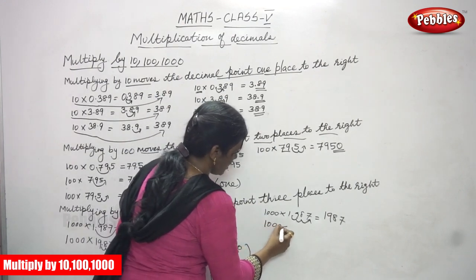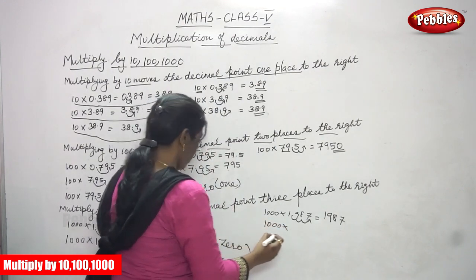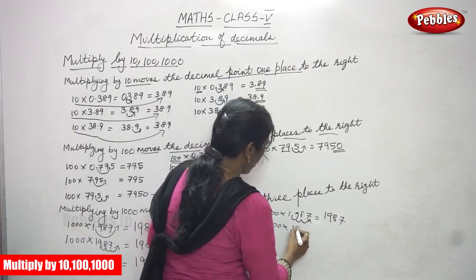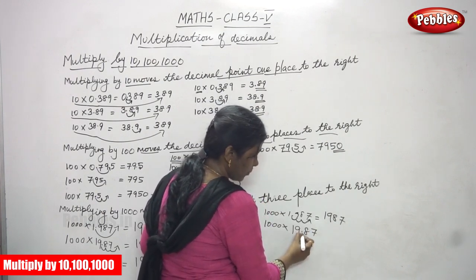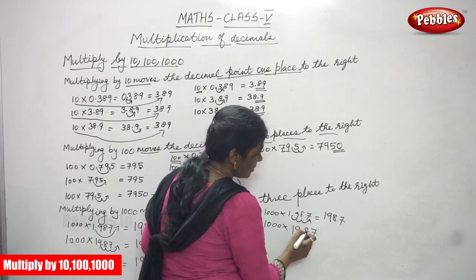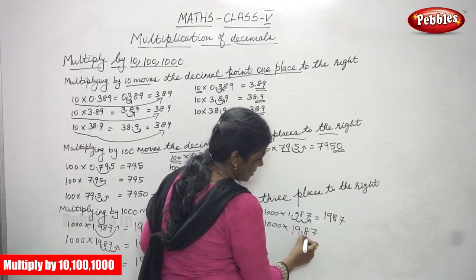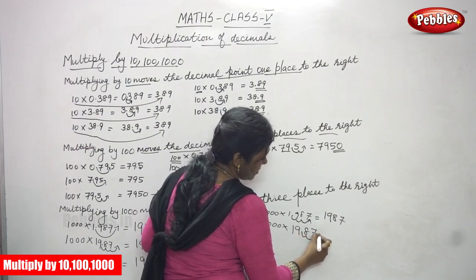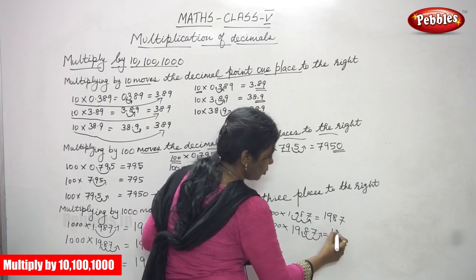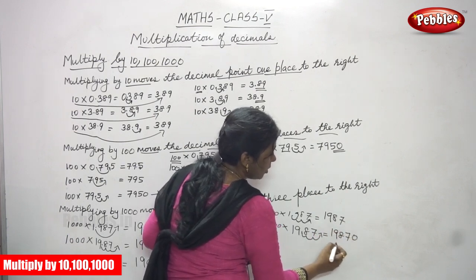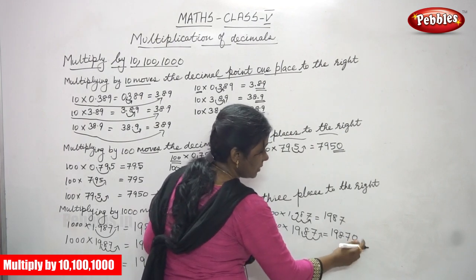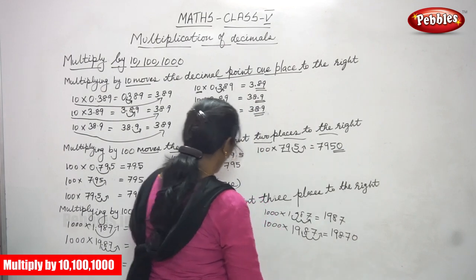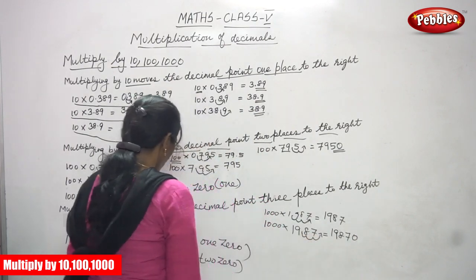Next, 1000 into 19.87. This decimal point moves 3 places to the right — first place, second place, and third place. In the third place, there is no number, so you have to add 0. The answer is 19,870. This point will come here, but it becomes a whole number, so no need to put the point. We have to write only one extra 0.